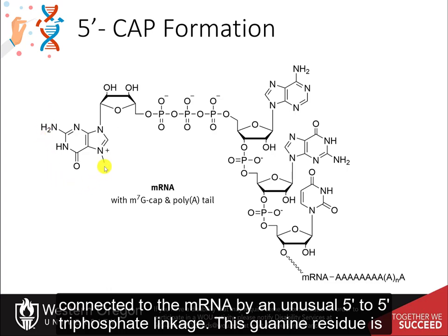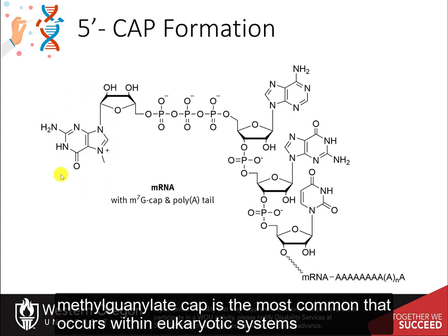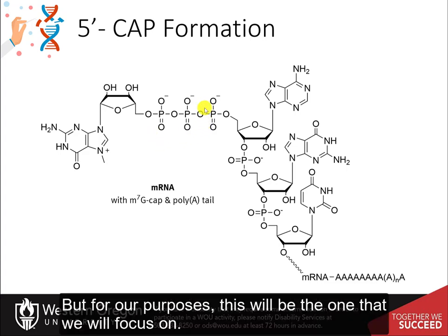This guanine residue is then methylated at the N7 position, forming a seven-methylguanosine cap. This seven-methylguanosine cap is the most common that occurs within eukaryotic systems, but it's not the only one. For our purposes, this will be the one that we focus on.